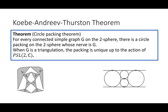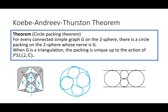This is where we use the Koebe–Andreev–Thurston theorem, also called the circle packing theorem: if you have a connected simple graph on the two-sphere, there is a circle packing whose nerve is G. For a triangulation, the packing is unique up to the action of PSL₂(ℂ). This was proven by Koebe in the 1930s, and independently reproven by both Thurston and Andreev in the 1970s. Given this triangulation, we can draw the circle packing — four circles on the outside, four going around the sides, and one in the middle.